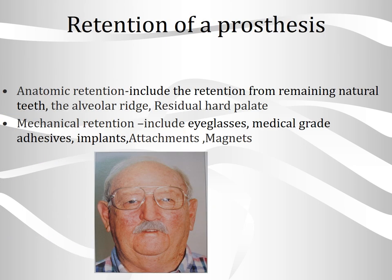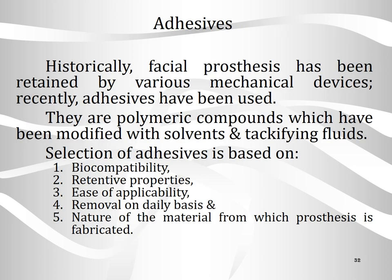Regarding retention of the prosthesis, anatomic retention includes retention from remaining natural teeth, alveolar ridge, or residual hard palate. Mechanical retention includes eyeglasses, medical grade adhesives, implants, attachments, and magnets.